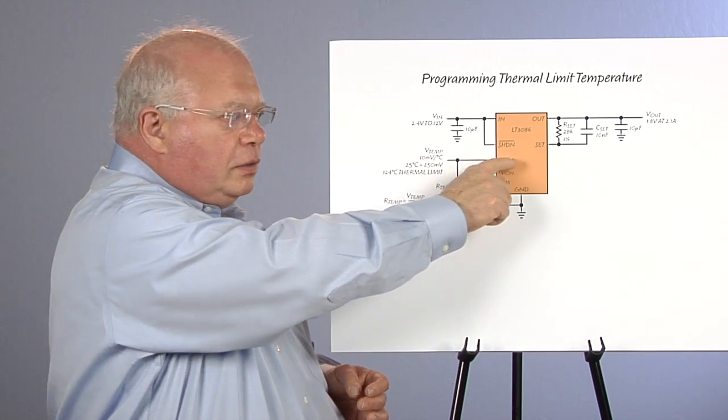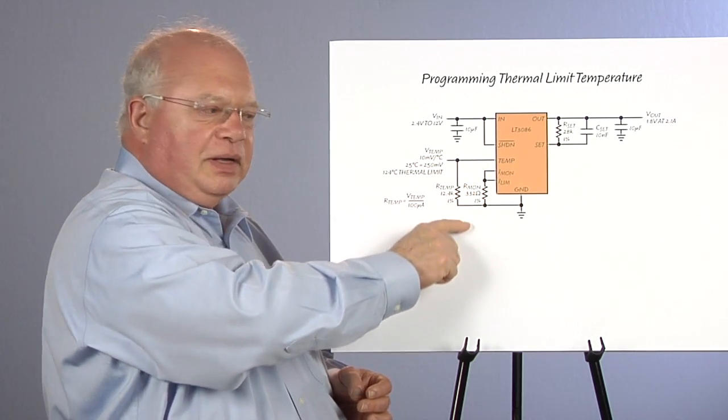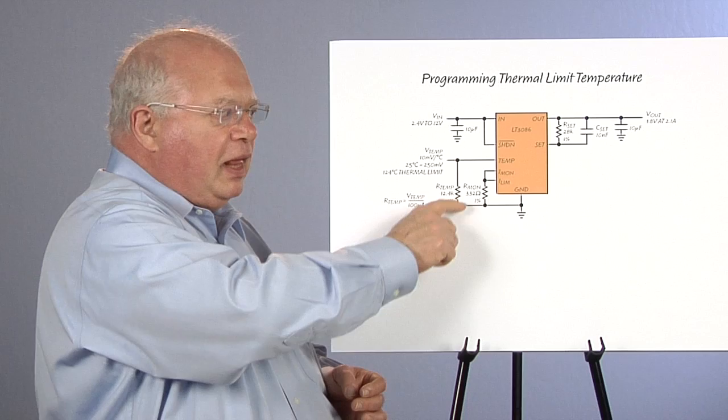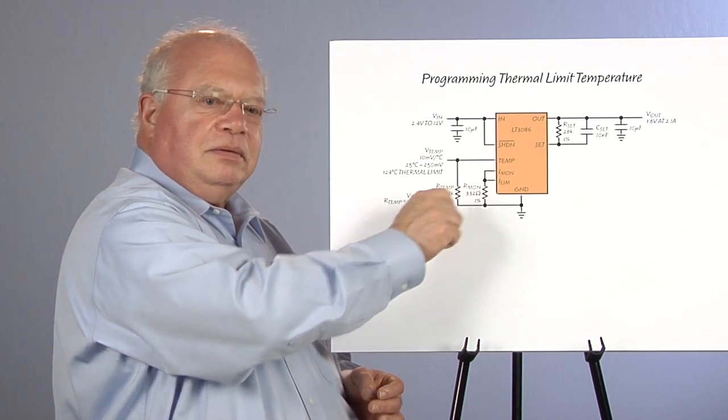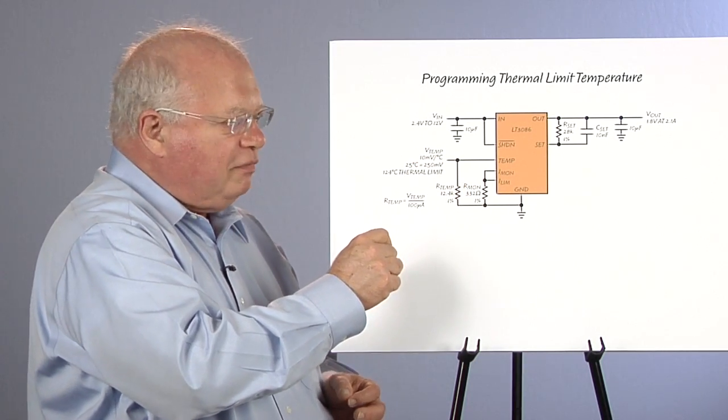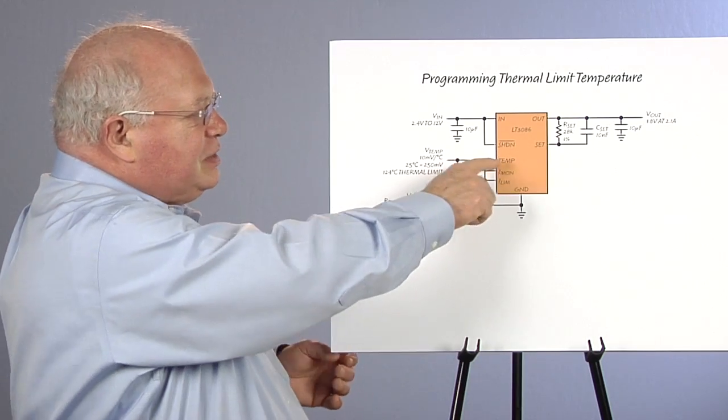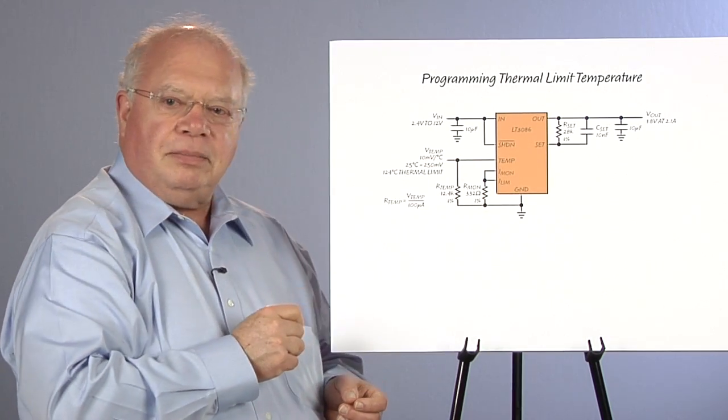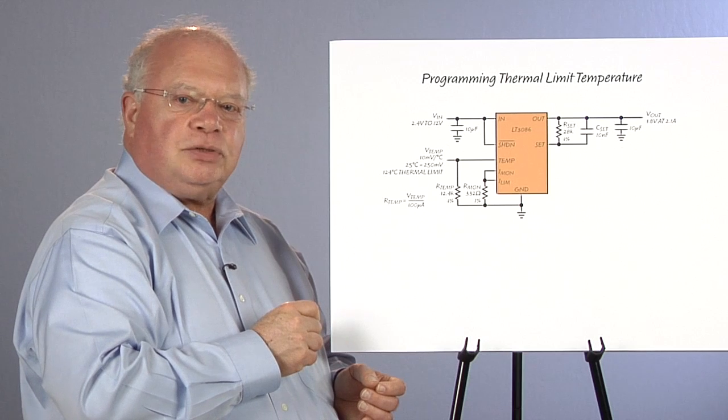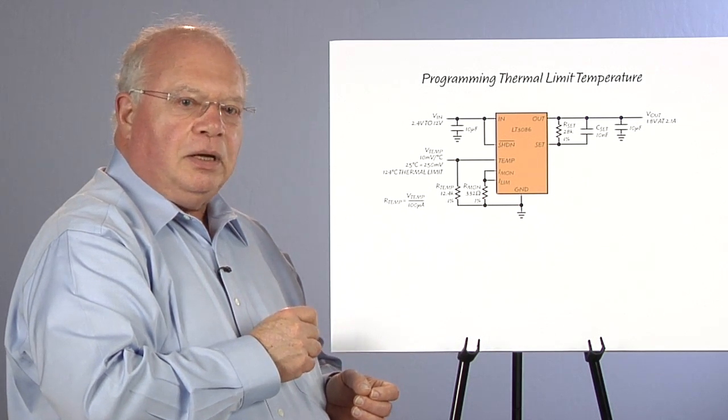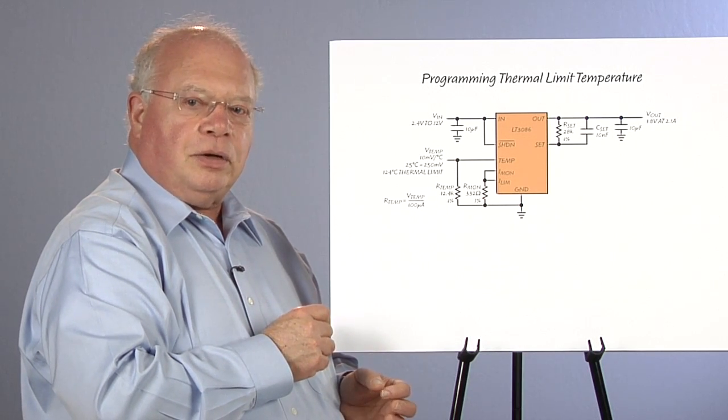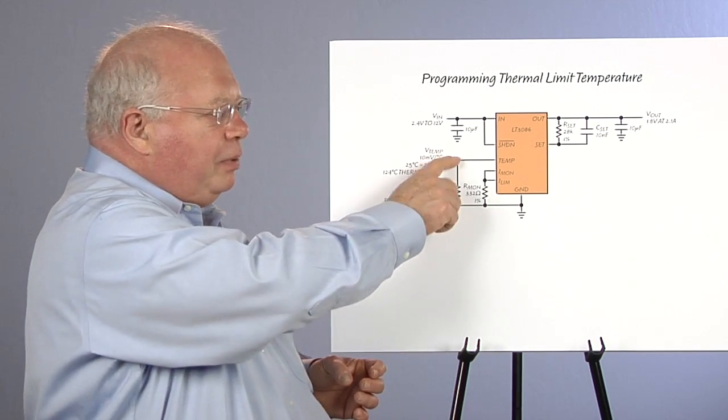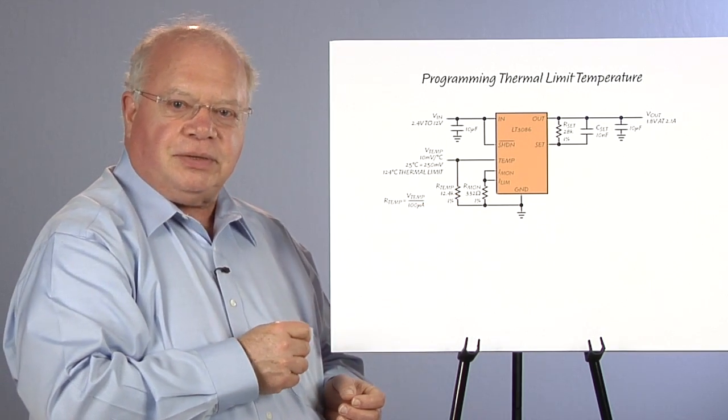We monitor the current drawn from the device to ground. And when we pull 100 microamps out of it, that's when we shut the device off. So, for example, if I want to limit the temperature of this device to 125 degrees C, which is lower than the built-in thermal limit of 165, I put a 12.4K resistor here.